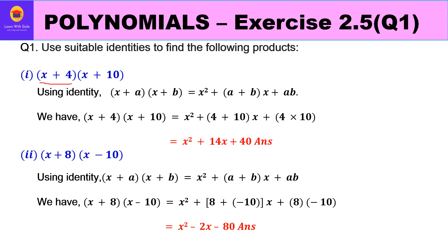The first part asks us to find the product of two factors: (x + 4) and (x + 10). If we compare with the identity (x + a)(x + b) = x² + (a+b)x + ab, we can see that x is x, a is 4, and b is 10.